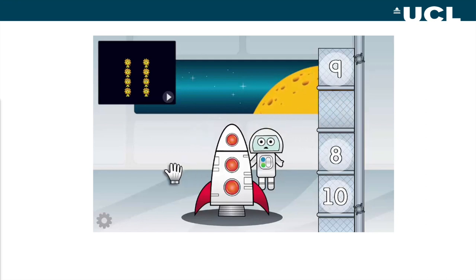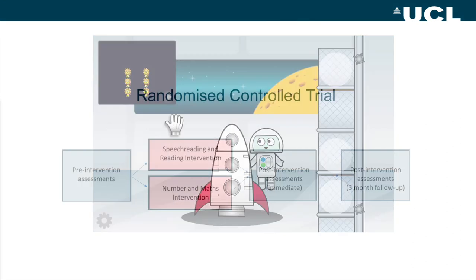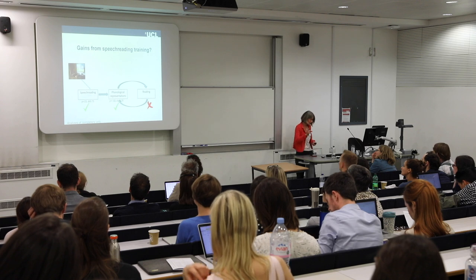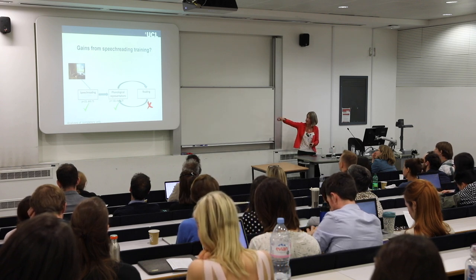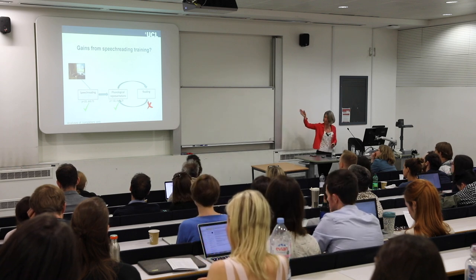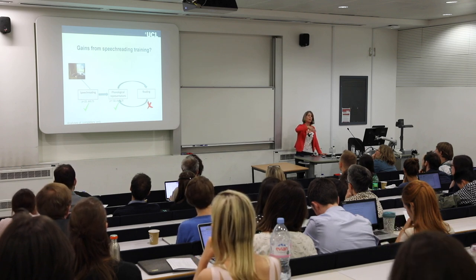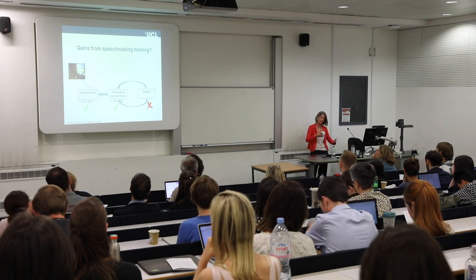We randomised them into two arms, they did 12 weeks of training, and we went back to see them straight away and then three months later — covering a whole academic year. Our primary outcome measure was speech reading: can we train speech reading and improve performance? This seems straightforward, and the answer is yes, which hadn't been shown before in an RCT with young deaf children. The outcome measures used models and items the children hadn't been trained on, so the improvement genuinely generalised.